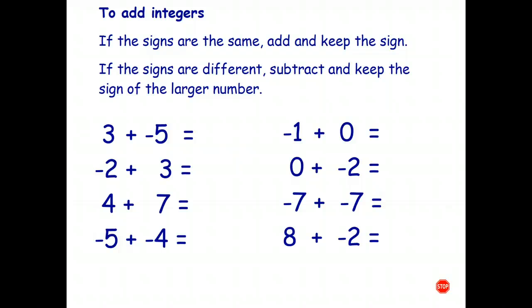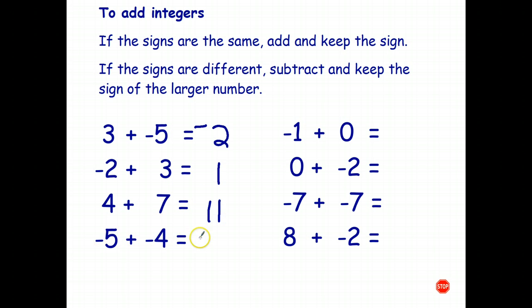Let's go ahead and solve these using the rule. The signs are different, so I subtract and keep the sign of the larger — the $5 debt is bigger than the $3. Signs are different: subtract, 3 minus 2 is 1, and the 3 is positive. Signs are the same: just add and keep the sign, so negative 5 plus negative 4 is negative 9. With zero it just doesn't change the answer — any time you add zero, you keep the same number.